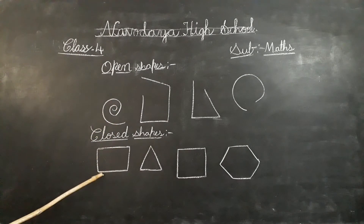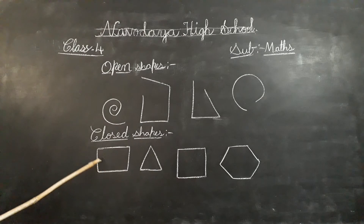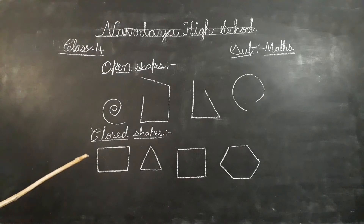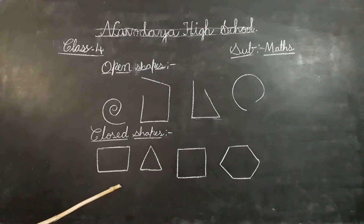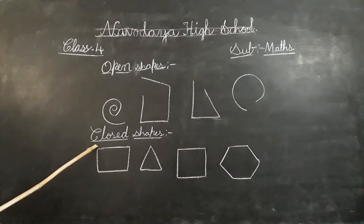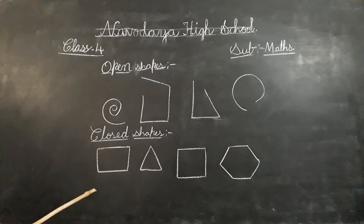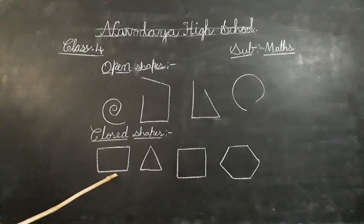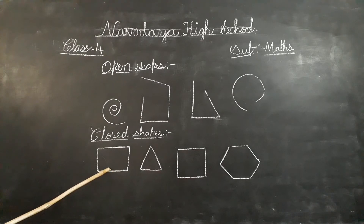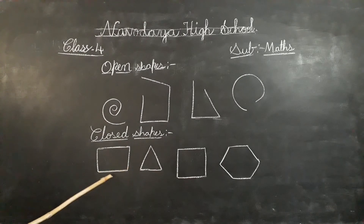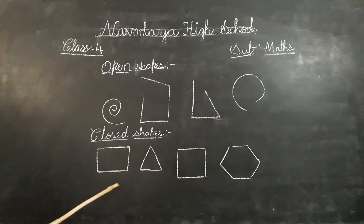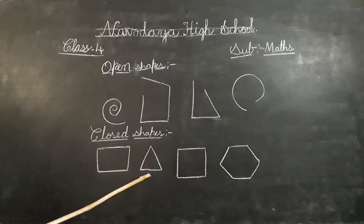Closed shapes. The end points of the shapes are not visible. They are connected with one another and hence there is no gap between the end points. Such figures or shapes which are closed on all sides are called closed shapes.